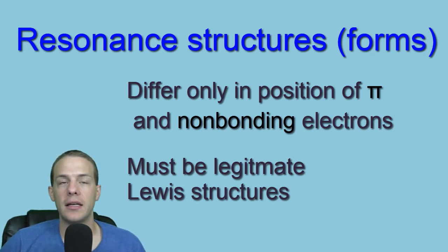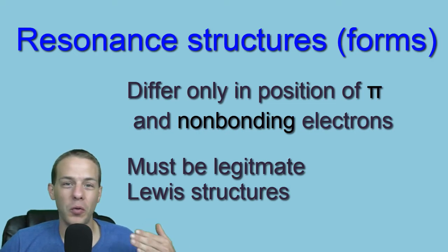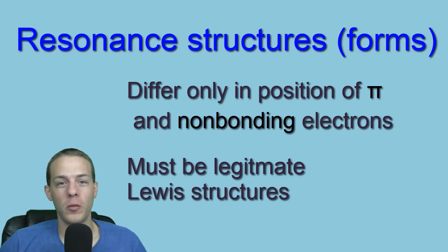You can't violate the rules of formal charge, which is really important. I do have a video that's all about formal charge. The sum of the formal charges must equal the charge of the molecule or polyatomic ion. That's one rule. And the other rule about formal charge is that when there's multiple Lewis dot structures possible, you're going to pick the one or ones that have the fewest number of non-zero formal charges.